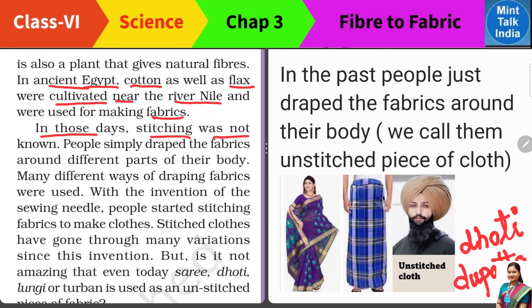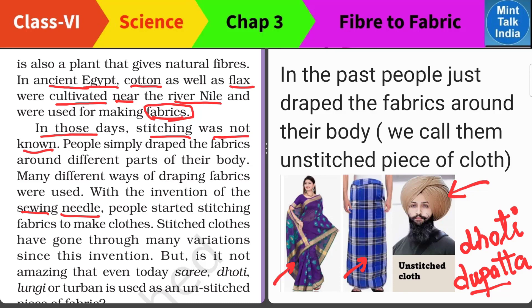In those days, stitching was not known, because sewing needle — जो सिलाई करने वाली needle होती है, सुई — वो तो invented नहीं हुई थी। तो उस समय लोग सिर्फ fabric बनाते थे और इसी fabric को अपने body के आसपास लपेट कर अपने body को cover करते थे। तो इस type की चीजें आज भी हम use करते हैं — जैसे saree, lungi, dhoti, turban यानी पगड़ी, dupatta — ये सब एक लंबी fabric होती हैं, मतलब एक लंबा सा कपड़े का टुकड़ा, जिसमें किसी भी तरह का stitch नहीं होता।